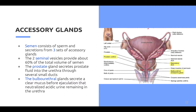The accessory sex glands produce seminal fluid and clean and lubricate the urethra. Semen consists of sperm and secretions from three sets of accessory glands. The two seminal vesicles provide about 60 percent of the total volume of semen. The prostate gland secretes prostate fluid into the urethra through several small ducts. The bulbourethral glands secrete a clear mucus before ejaculation that neutralizes acidic urine remaining in the urethra.